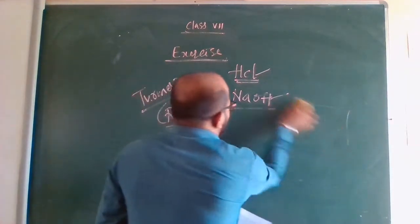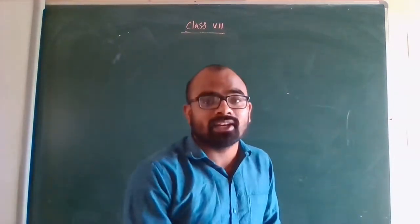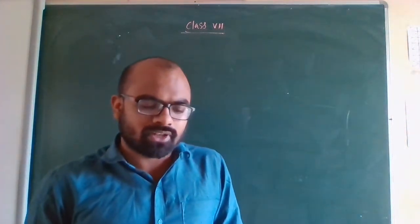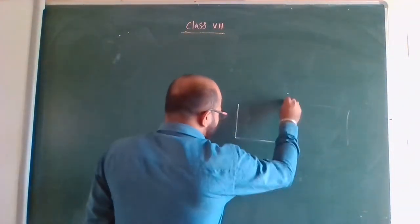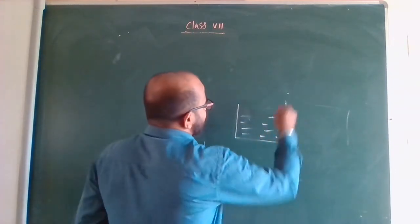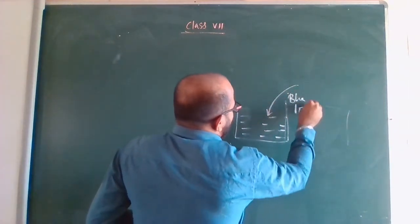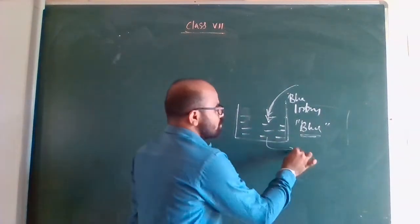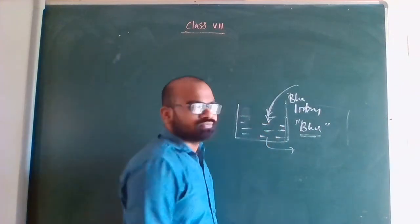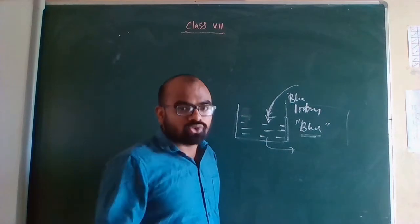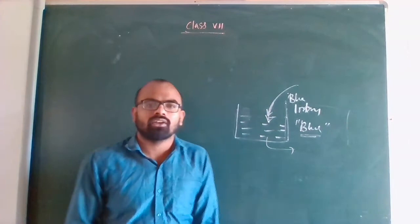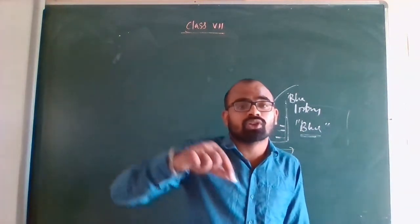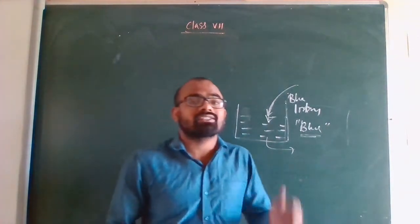Question 10: Blue litmus paper is dipped in a solution and it remains blue. What is the nature of the solution? If it were acidic, the blue litmus should have turned red. But it is not turning here — blue is remaining blue. That means it is a basic solution, or sometimes it could be a neutral solution, because in a neutral solution blue will remain blue and red will remain red.